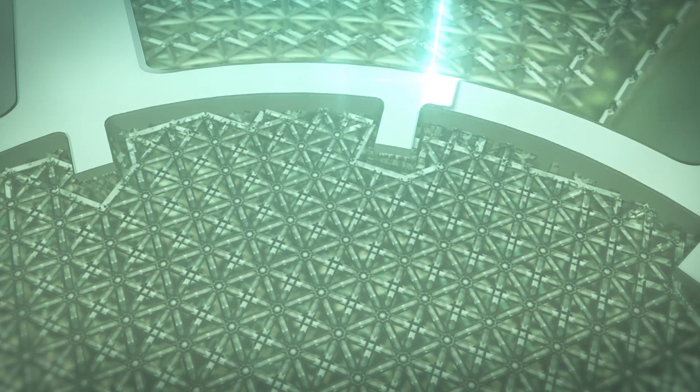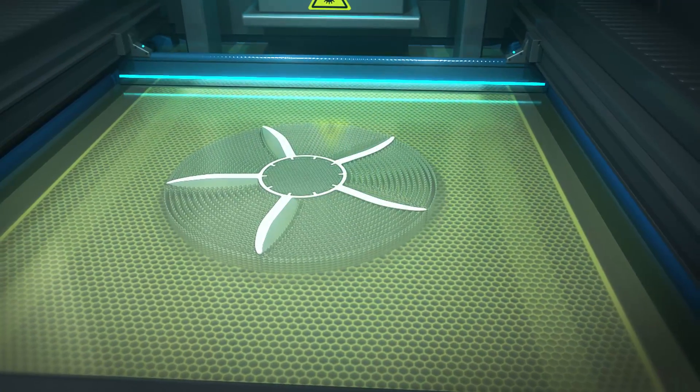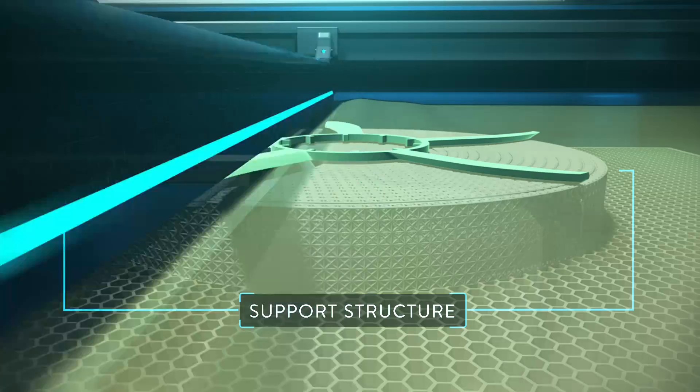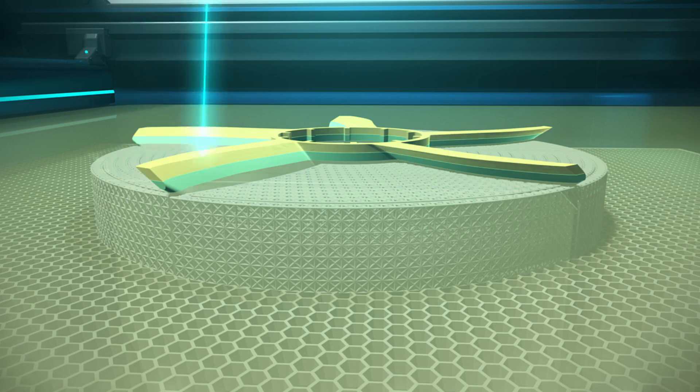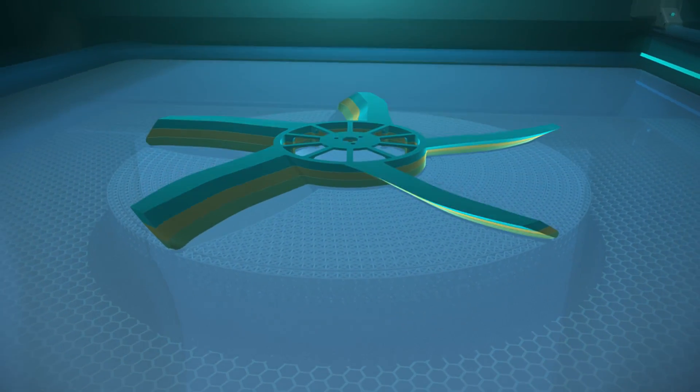And wherever the laser hits, it will go from a liquid to a solid. After the first layer has solidified, that is going to drop down one layer thickness and then a recoater blade sweeps across and deposits the next layer of resin. And that process just repeats layer after layer until the part is finished.